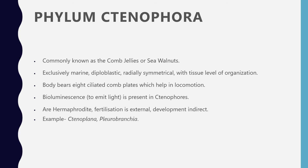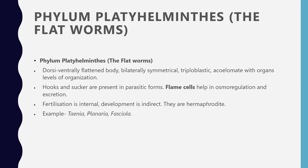Examples of Ctenophora include Ctenoplana and Pleurobrachia. Next is phylum Platyhelminthes — flat means plate-like. These are flatworms with distinct dorsal and ventral surfaces. They have bilateral symmetry, are triploblastic, and acoelomate, with organs — belonging to the organ level of organization.